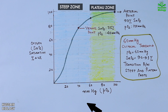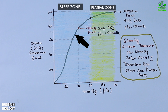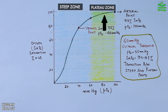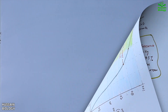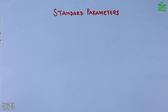In the steep zone, a small change in PO2 causes a large change in hemoglobin saturation — this is where we mostly see O2 unloading. In the plateau zone, a large change in PO2 causes little change in hemoglobin saturation — it is a stable zone where we see O2 loading.